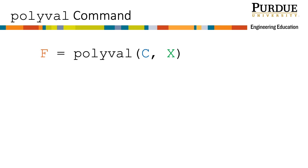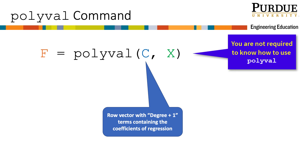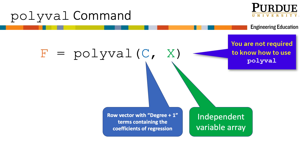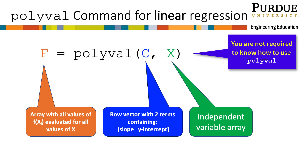Polyval is a built-in MATLAB function that evaluates a polynomial, meaning it finds all of the y values for the polynomial if you input all of the x values. You are not required to be able to use polyval in this course. If you do choose to use it, it requires two inputs. The first input, c, is the row vector that contains all of the coefficients of the polynomial going from highest degree to lowest degree. The second input is the array that contains all of the values of the independent variable. For linear regression, c is just the row vector with the slope as the first element and the y-intercept as the second element — so for our example, this is the coefs variable.